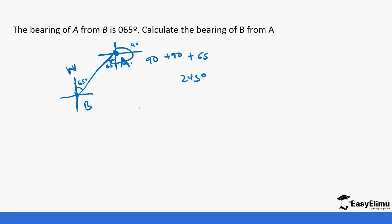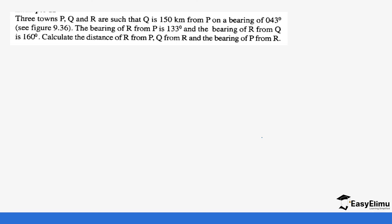Now let's look at an application example using trigonometric ratios. Three towns P, Q, and R are such that Q is 150 kilometres from P on a bearing of 043 degrees. The bearing of R from P is 133 degrees, and the bearing of R from Q is 160 degrees. We need to calculate the distance of R from P, Q from R, and the bearing of P from R. First let's sketch how the towns look. We place P, and since the bearing is 043 degrees, Q is 150 kilometres in that direction.